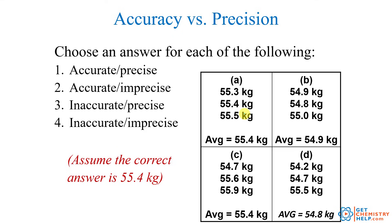Now let's try this with some actual data like you might see in the lab. Here are four different sets of data — A, B, C, and D — and the true value is 55.4 kilograms. First, which set of data is both accurate, close to 55.4, and precise, with all measurements very close to one another? It looks like A, because the values are all very close to one another, which means they're precise, and when you average them out the average is very close — actually exactly on — the true value.